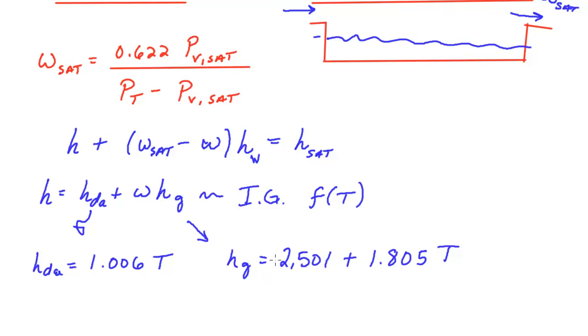So again, these two things here are only functions of temperature, and so this total enthalpy of the moist air, we can put all this together. So really, this is 1.006 times temperature plus omega, and if we put this inside, that is a relationship for our enthalpy of our moist air.